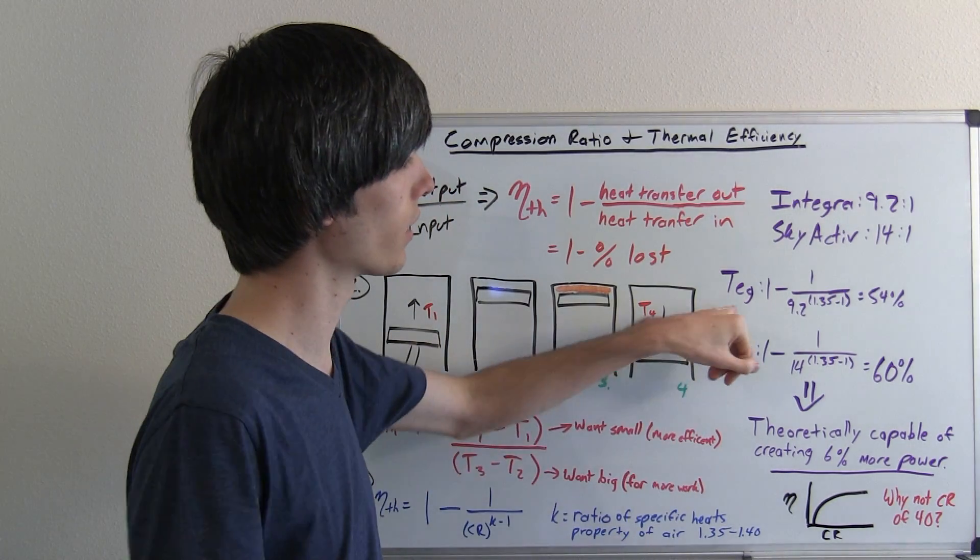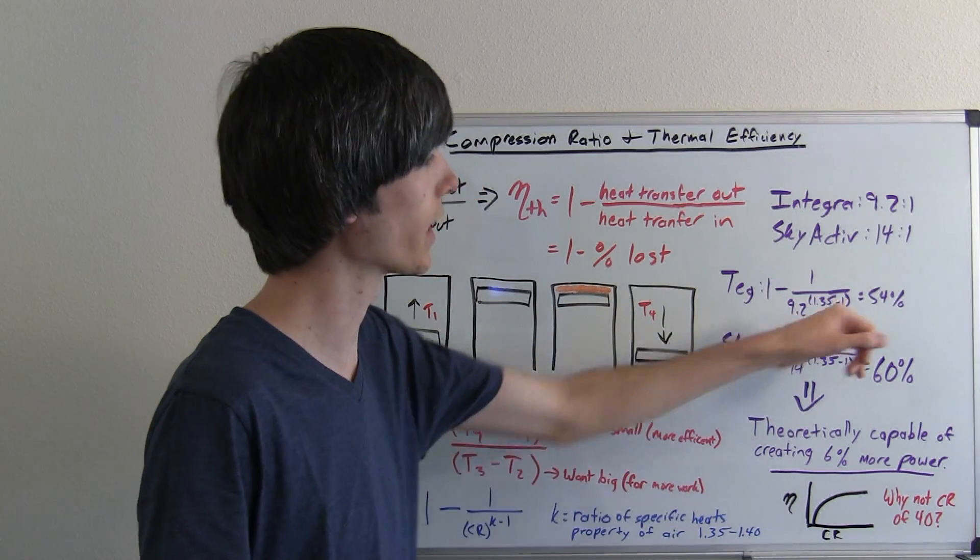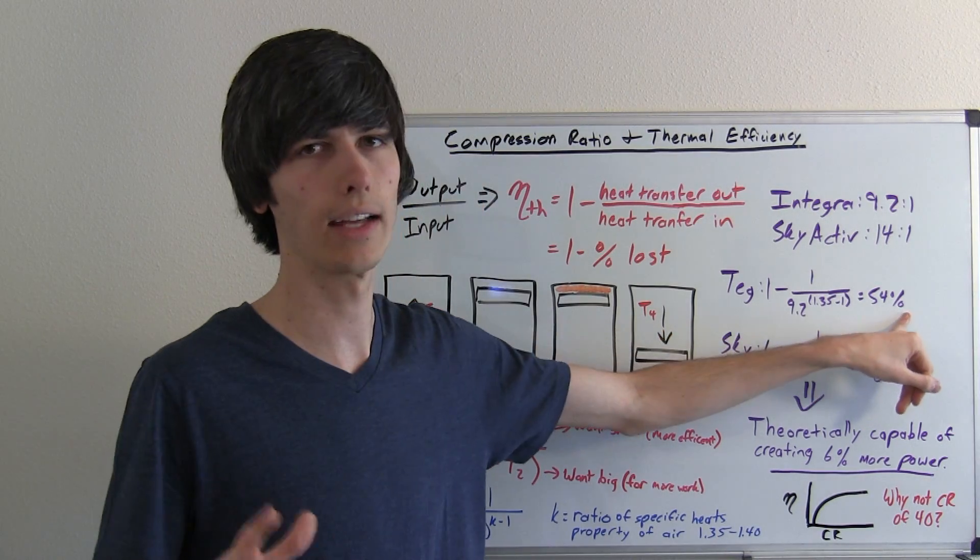So theoretically if you just plug in the numbers, 1 minus 1 over 9.2 to the 0.35, that gives you a theoretical thermal efficiency of 54%. Now this is ideal.